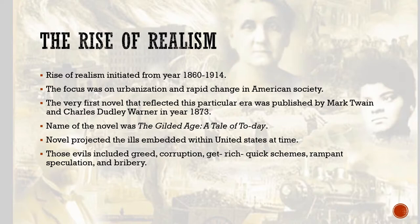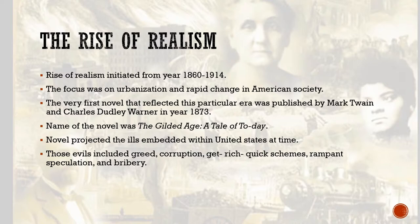Mark Twain and Charles Dudley Warner published the very first novel reflecting that period in year 1813. The name of the novel was The Gilded Age: A Tale of Today. The novel projected the ills embedded within the United States of America at that time. Those evils included greed, corruption, rampant speculation, and bribery. The agenda behind all this was to attain financial growth, material success, and easy fortune. Social commentary and comic wit were the preferred areas of that period.